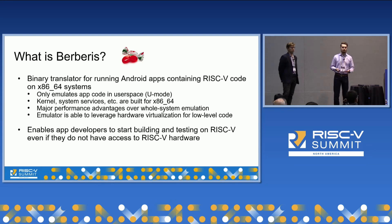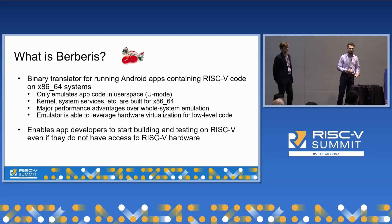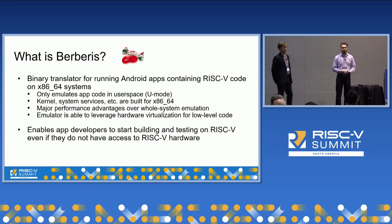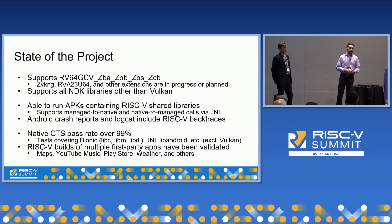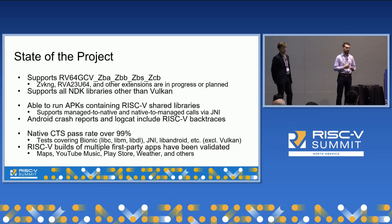This is significant because it enables app developers to build and test their apps without necessarily having access to RISC-V hardware capable of running Android, or having a workstation powerful enough to do whole-system Android emulation. We currently support the RV64G ISA along with the compressed instruction, vector instruction, and bit manipulation instruction extensions, along with some others that are either planned or in progress.